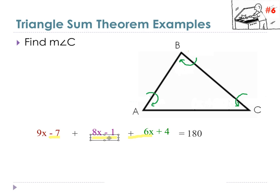Now let's look at these numbers: negative 7, negative 1, and 4. What do we get when we add those together? We get negative 4. So our equation is 23x minus 4 equals 180.